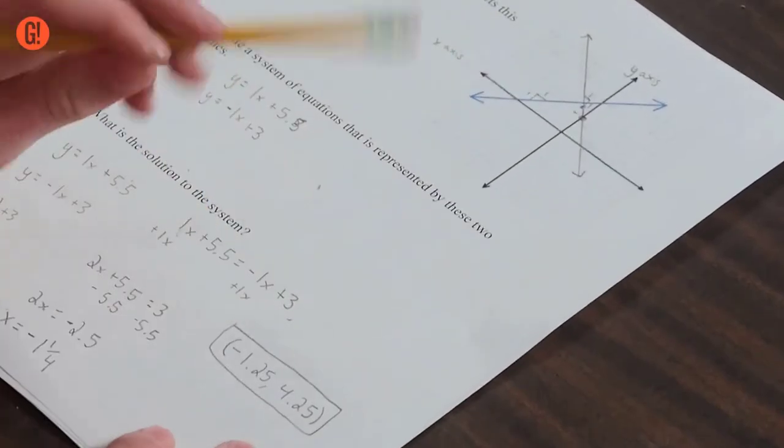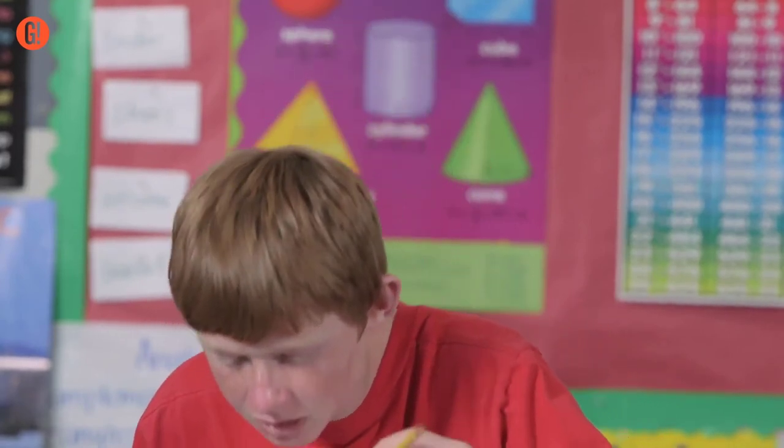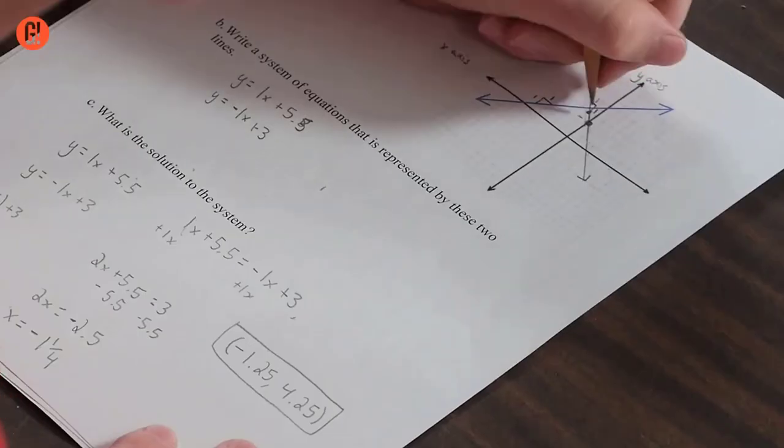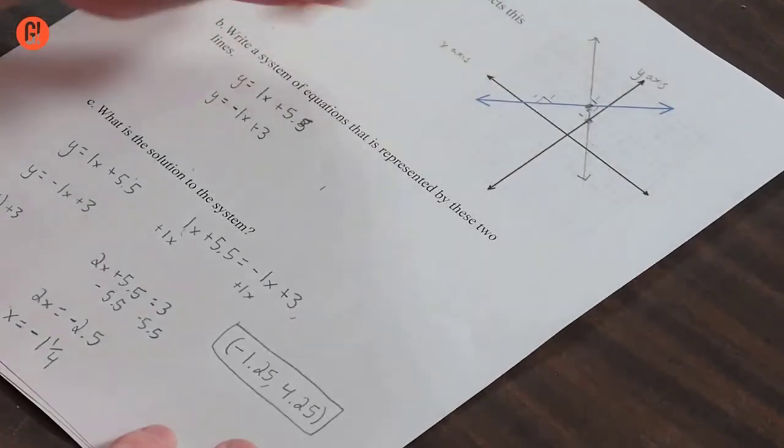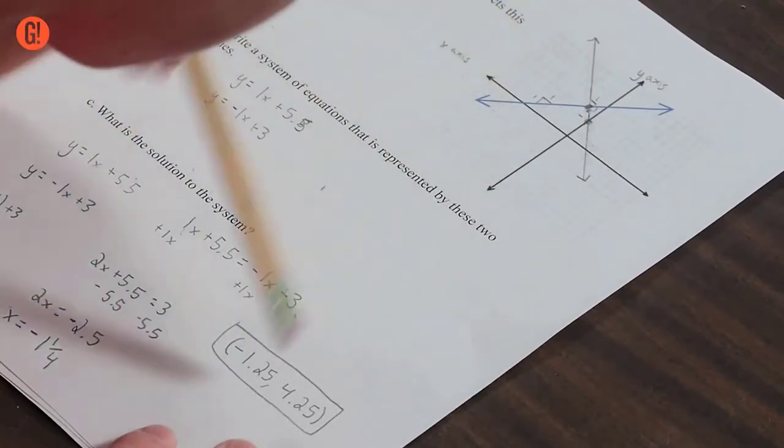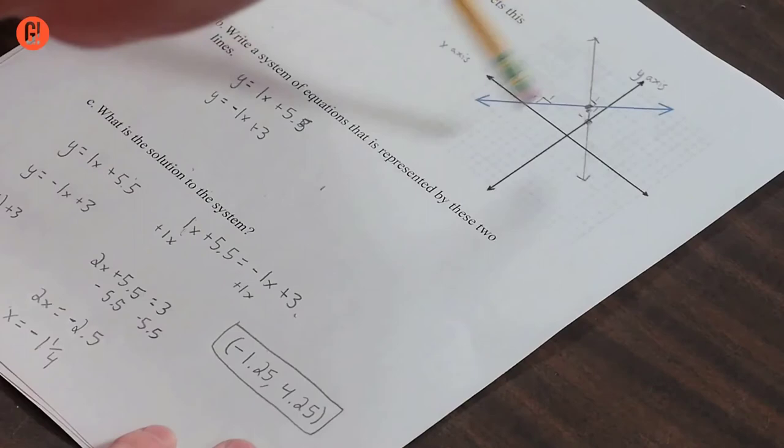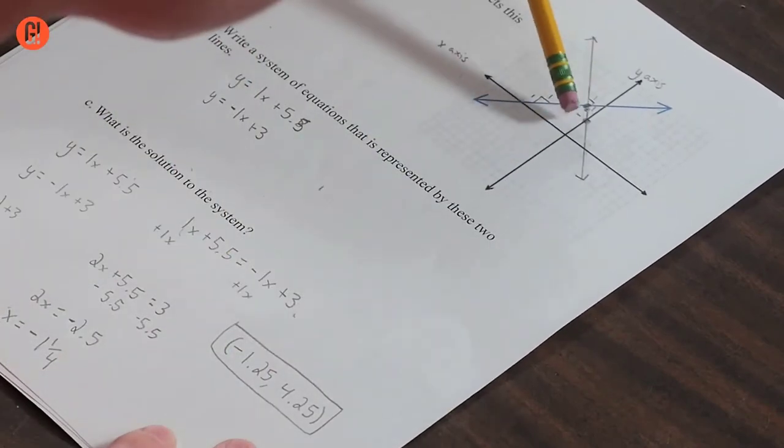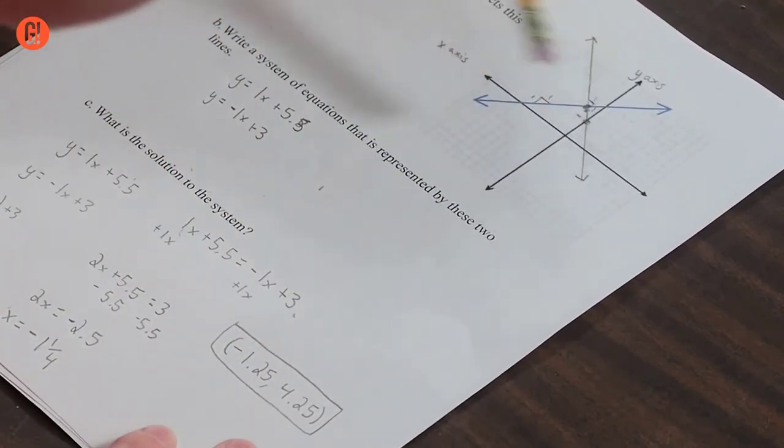So now I'm going to check this to make sure it intersects where my line intersects. The line intersects right here. So this looks like negative one point two five and then four point two five, so one, two, three, four, and that looks like four point two five.